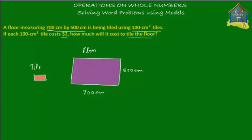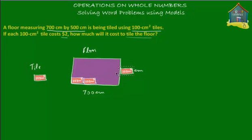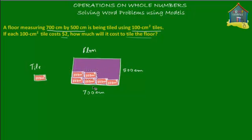This tile has an area of 100 centimeter square. The purple floor is being tiled using these little pink tiles — there are many of them. If I take this tile and place it here, there will be several tiles needed to cover the entire floor: a few here, a few more on top, and several more to cover the entire floor.